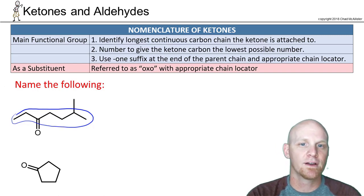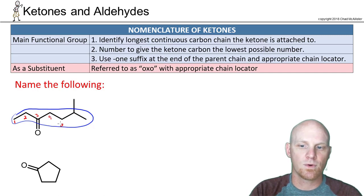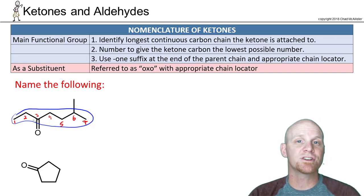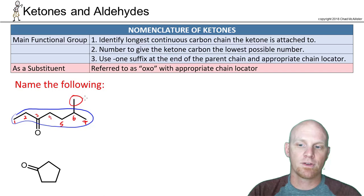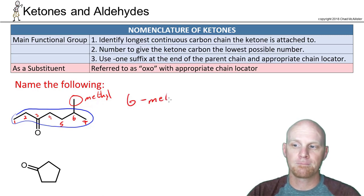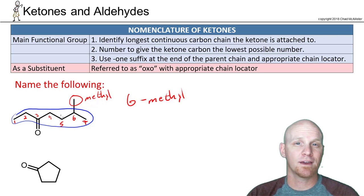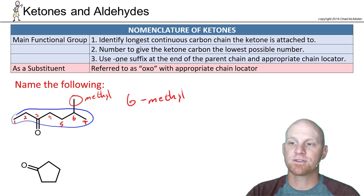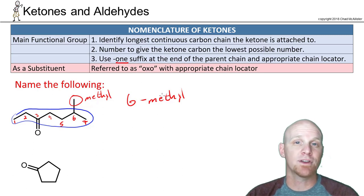Numbering left to right: one, two, three, four, five, six, seven. The carbonyl carbon is at position three — that's the chain locator for the ketone. We also have a methyl group attached to carbon six. Name substituents first, so we say 6-methyl. With a seven-carbon chain, that's heptane, and the suffix for ketones is -one, giving heptanone.